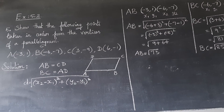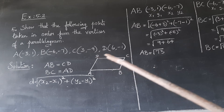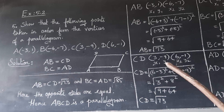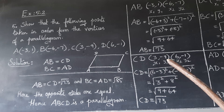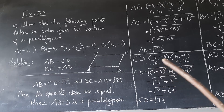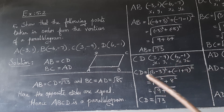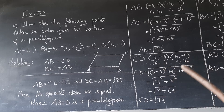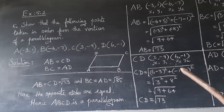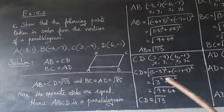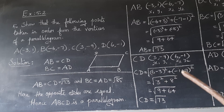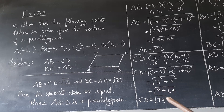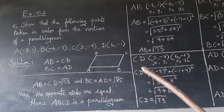Next, we have to find the CD distance. The CD values are (3, minus 9) and (6, minus 1). Assigning x1, y1, x2, y2 and substituting into the distance formula: 6 minus 3 is 3, squared gives 9; minus 1 minus (minus 9) is 8, squared gives 64. So 9 plus 64 equals 73. Therefore CD equals root 73.